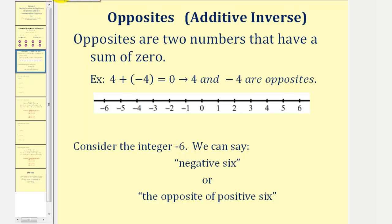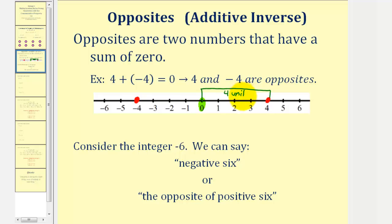If we plot opposites on the number line — for example, four and negative four — they're on the opposite side of zero, but they are equidistant from zero. The distance from positive four to zero is four units, and the distance from negative four to zero is also four units. If we consider the integer negative six, we normally say negative six, but there's nothing wrong with saying the opposite of positive six, or just the opposite of six.